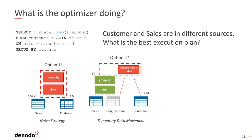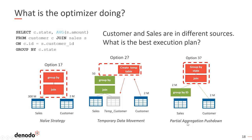So Denodo will most likely use one of the next two options. Option two leverages the temporary data movement option: we first query the customer table, then create a temporary table in the sales database with the customer data, do the join and group by, and return 50 rows to the end user. In this scenario Denodo is just operating as a query coordinator — the join and aggregation are actually being executed in the sales database. Option three leverages something called partial aggregation pushdown, used when we're not allowed to create that customer table in the sales database.